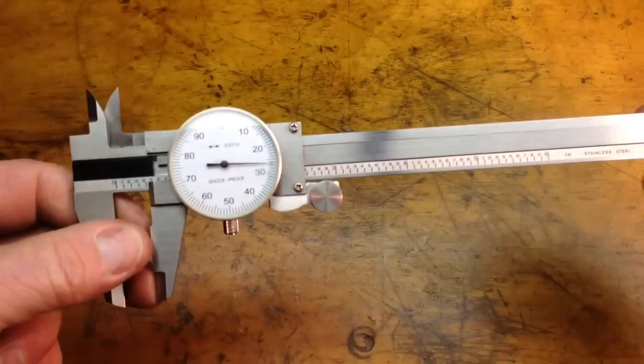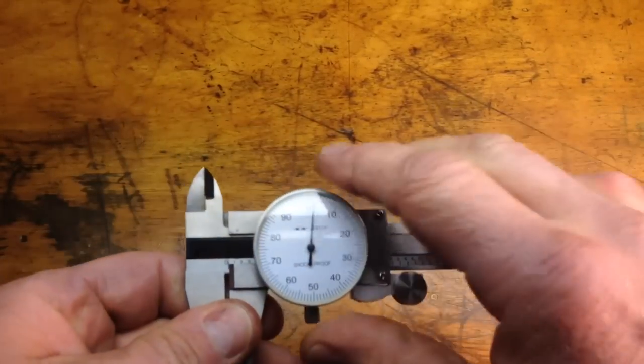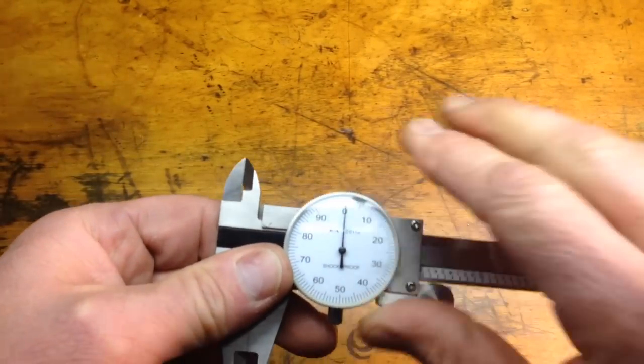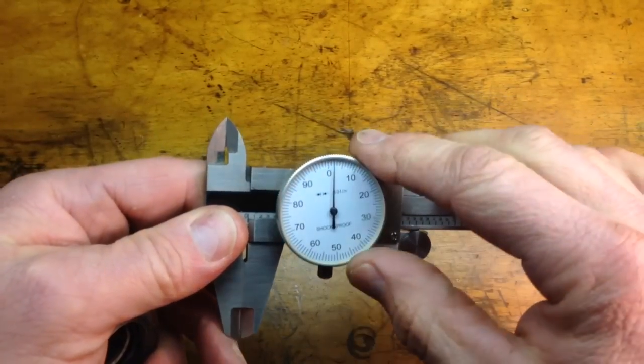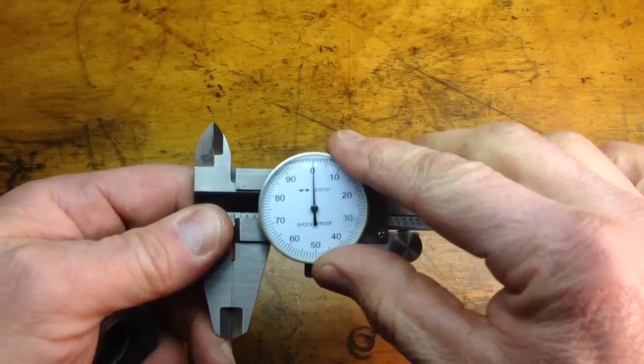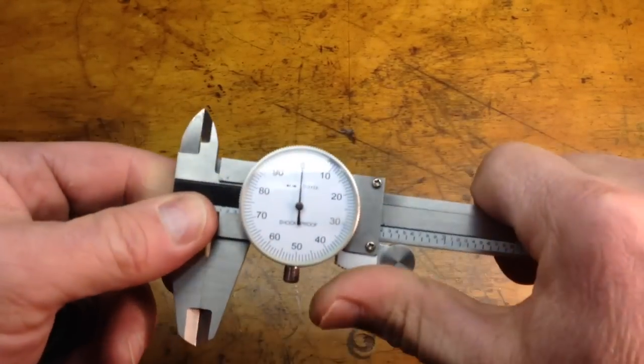Now here's a dial caliper, much quicker, easier to read, slides back and forth, basically the same. The dial is adjustable, just unlock it, and you can zero it out. You want to make sure that it is at zero, so we'll adjust it back, and then we'll lock it into place.